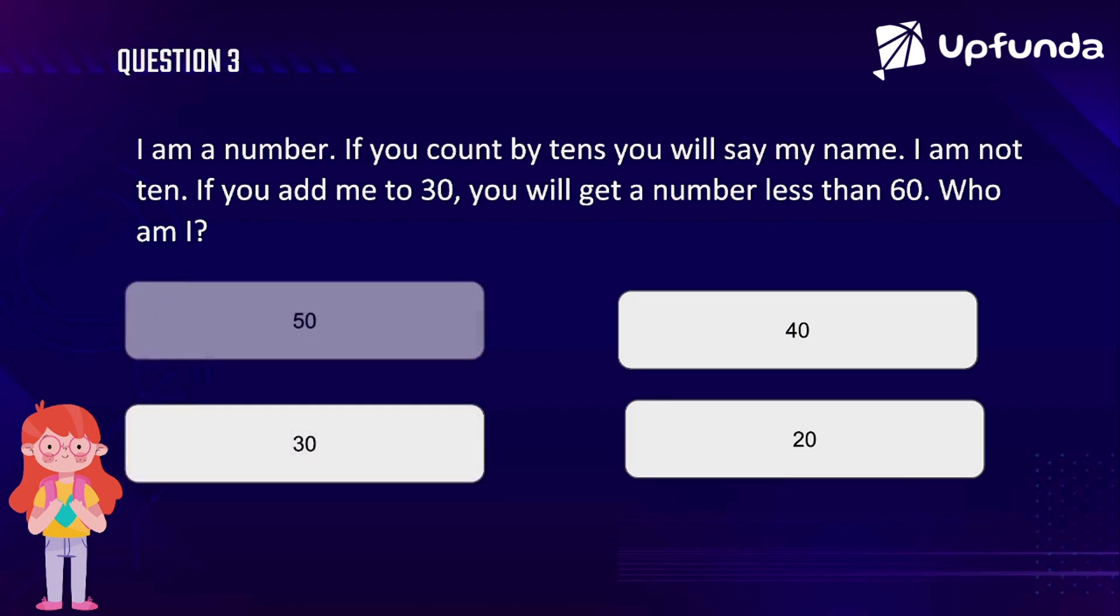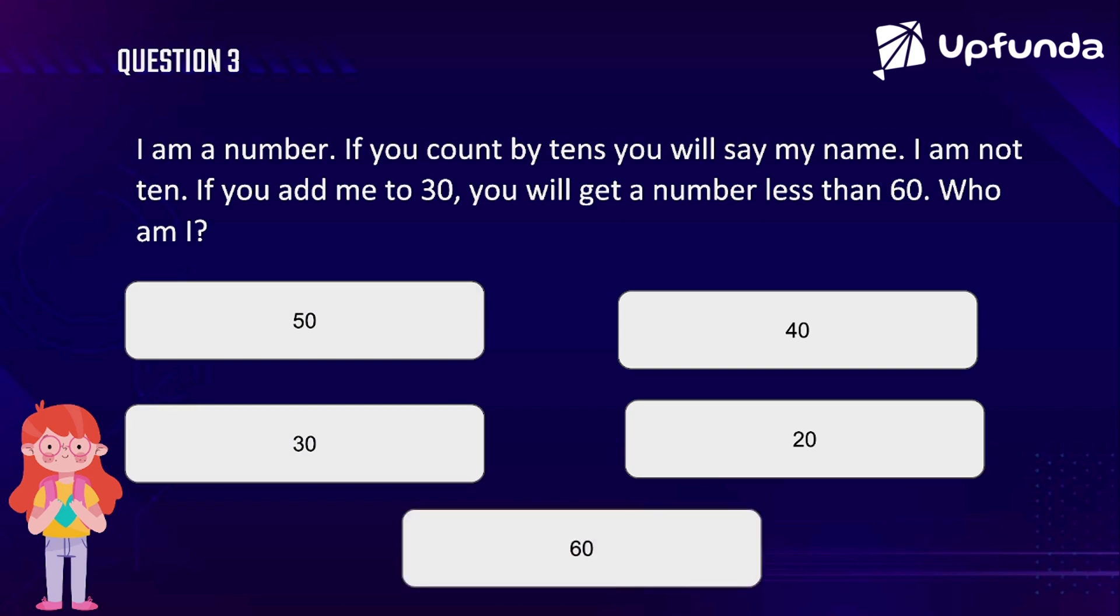You have to count by tens: 10, 20, 30, like that. If you add me to 30, you will get a number less than 60. Who am I? So let's take 10, but they've already said 10 is not the number. Let's take 20.